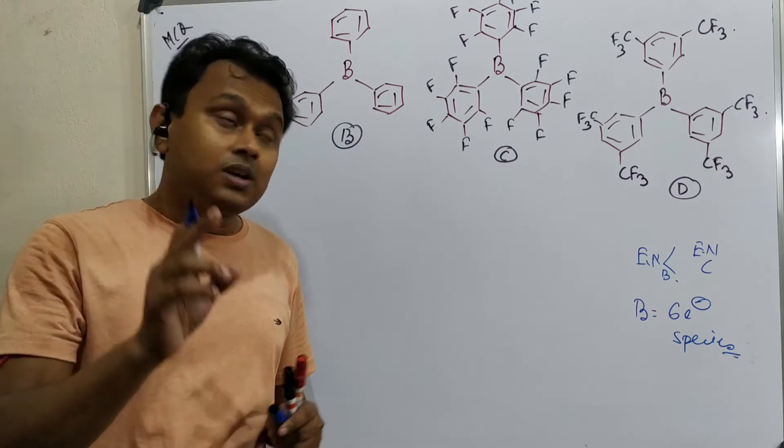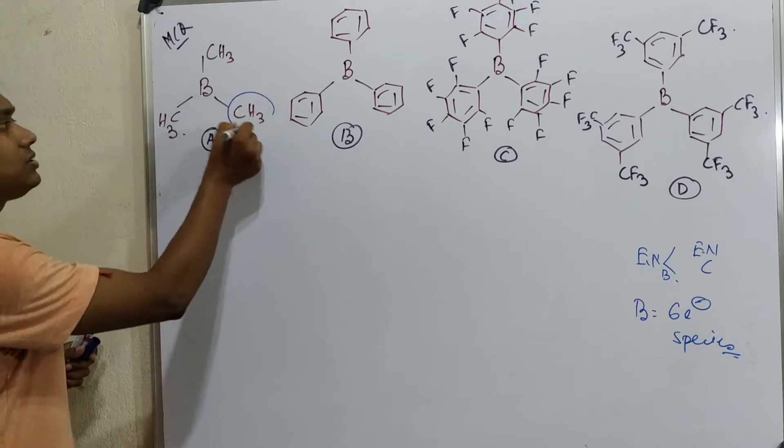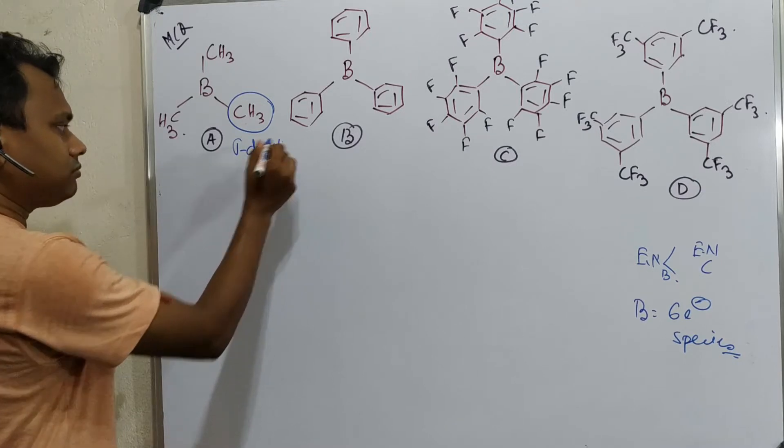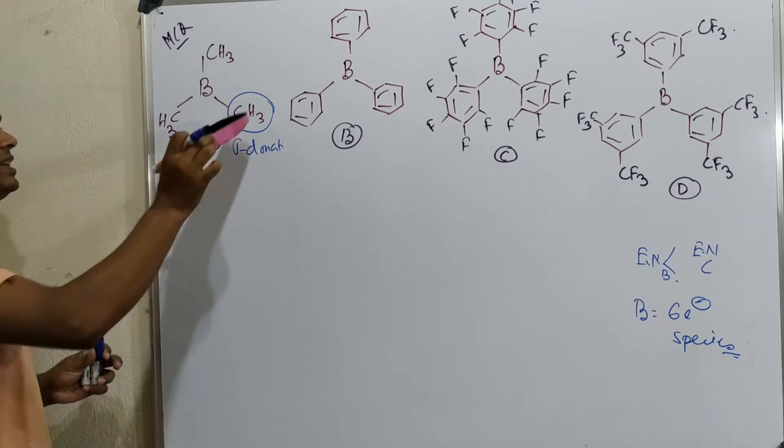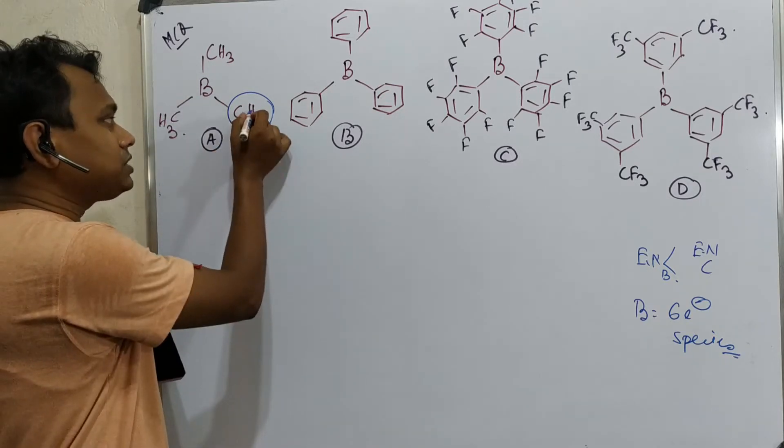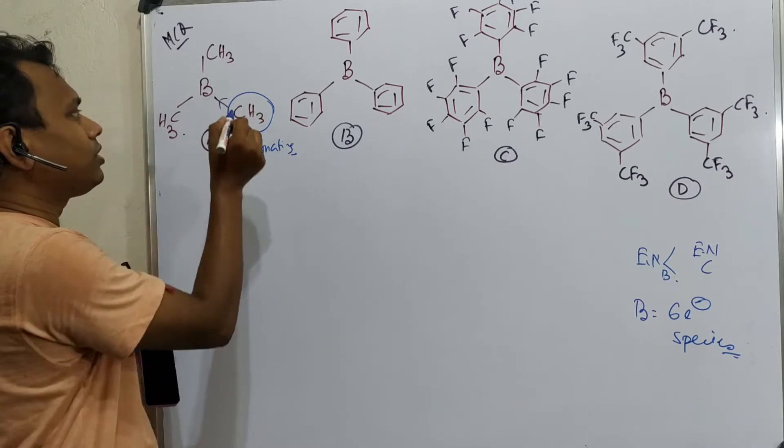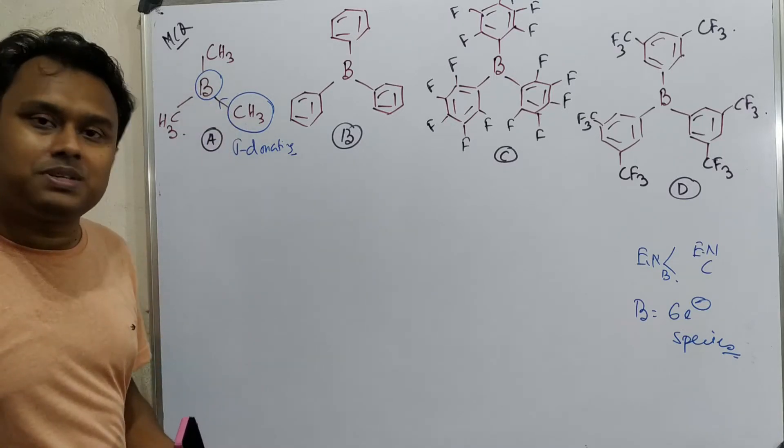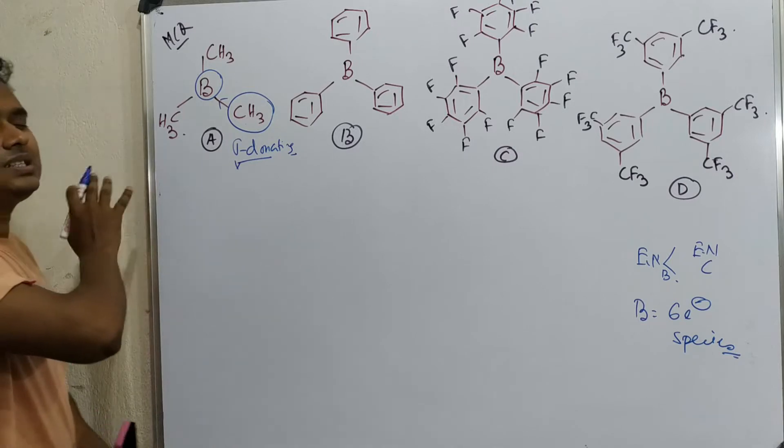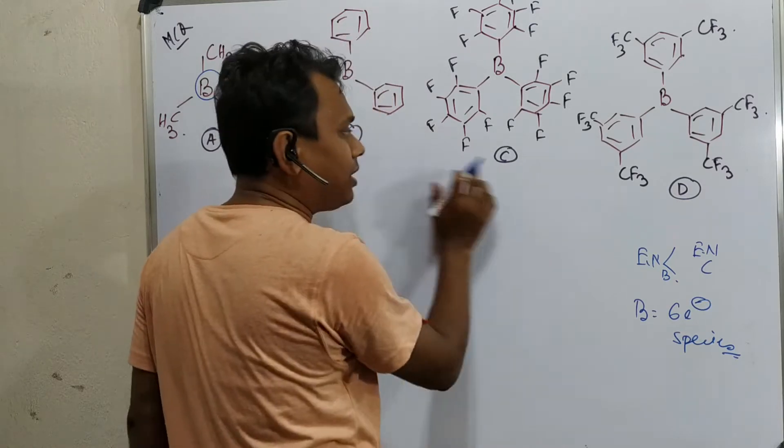Now the question is, this Lewis acidity is because of minus R effect or carbon skeleton. If you consider CH3, it can donate through sigma. But sigma donating is through this bond, so it will leave boron as a six-electron species. It does not affect at all. So this option A is out of comparison, just a dummy option. Now comparison is among these three options B, C, and D.